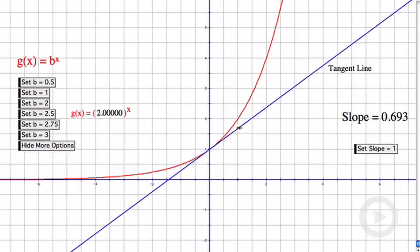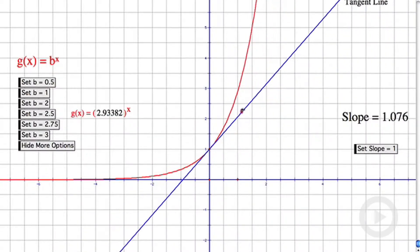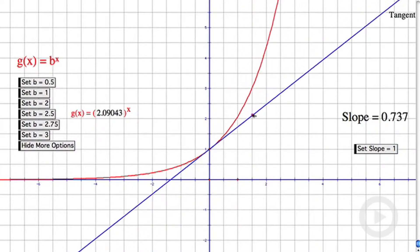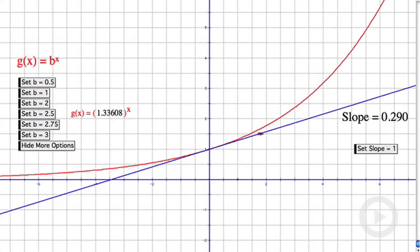That graph is in red, and then the graph of the tangent line is in blue. Right now, the slope is 0.693. Let me move this tangent line around. Notice as I move the tangent line, it's still tangent at (0,1), but as I move the tangent line around, the base changes.